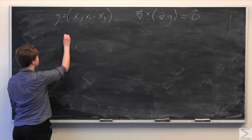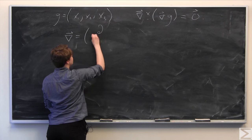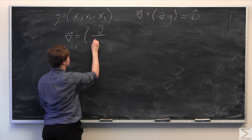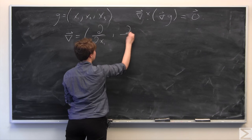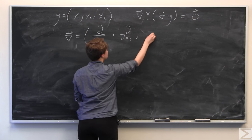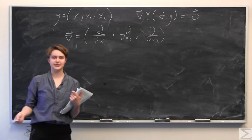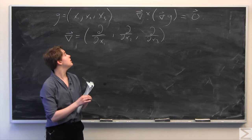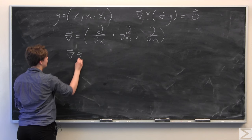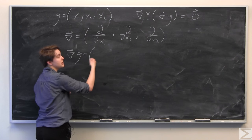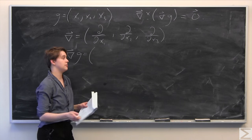So recall that the gradient operator is going to be defined as partial with respect to x1, partial with respect to x2, and partial with respect to x3, since we're in R3. Keep this in mind as we go ahead and do this proof. We notice that when we have del g,